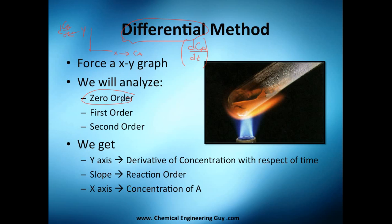We will analyze only these three orders: first order, second order, and zero order, but you can use it for any order you want, so you can actually analyze it for yourself, third order. We will get the y-axis, which is the derivative of concentration with respect to time. The slope of our straight line will be the reaction order, or the order of the reaction, alpha. If alpha equals 1, you know it's first order; if alpha equals 2, you know it's second order. The x-axis will be our concentration of A at any moment.